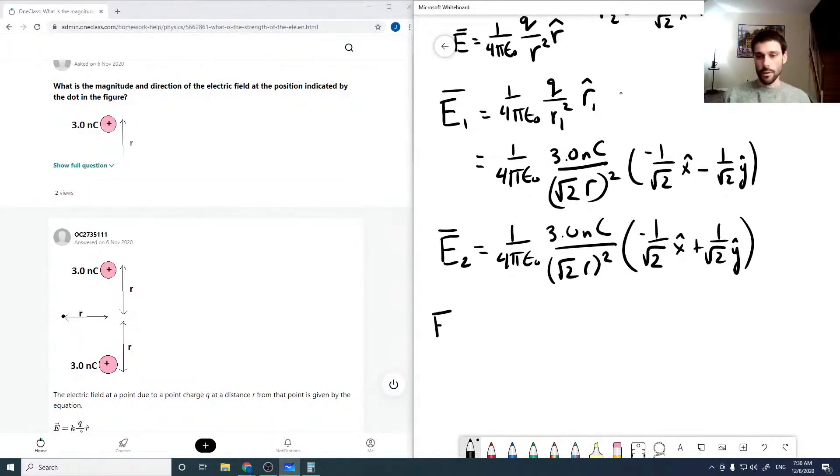Now our total is just the sum. We just add these up, so we're going to pull out the like terms, which is all this stuff: 3 nanocoulombs. I'm going to go ahead and square this so we get a 2 r squared.